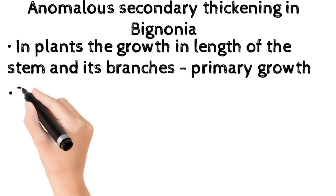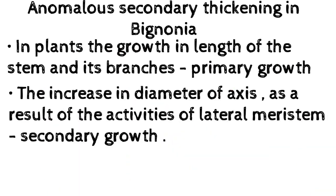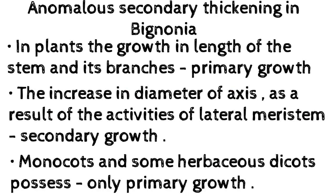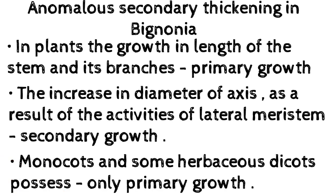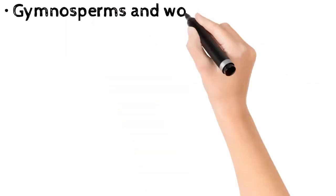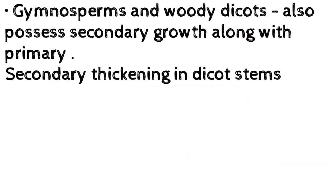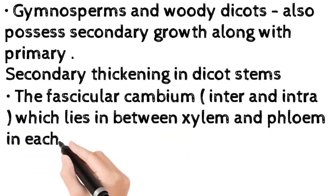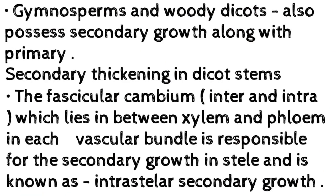Primary growth is the increase in diameter of the axis as a result of the activities of lateral meristem — this is secondary growth. Monocots and some herbaceous dicots possess only primary growth. Gymnosperms and woody dicots also possess secondary growth along with primary growth.